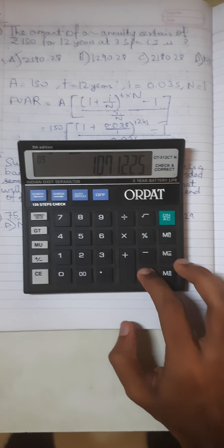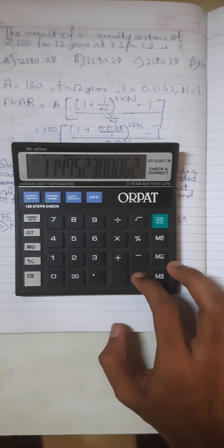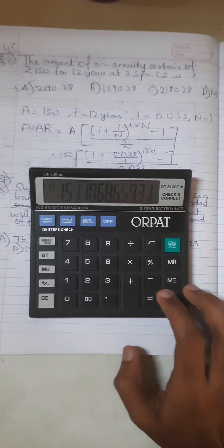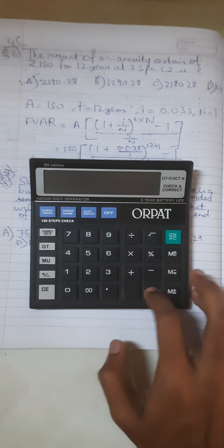Now we have to multiply 12 times: 2, 3, 4, 5, 6, 7, 8, 9, 10, 11, 12, minus 1, divided by...